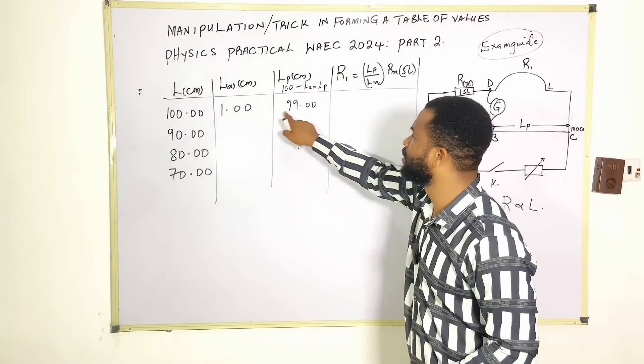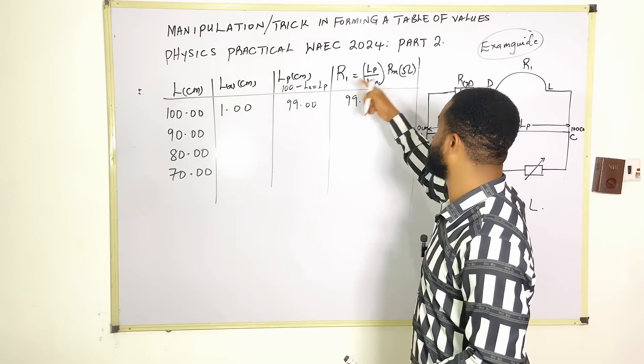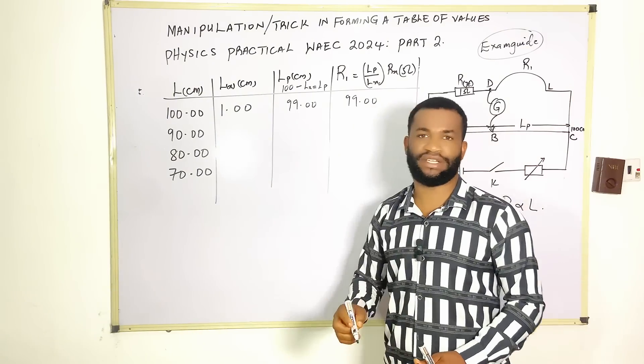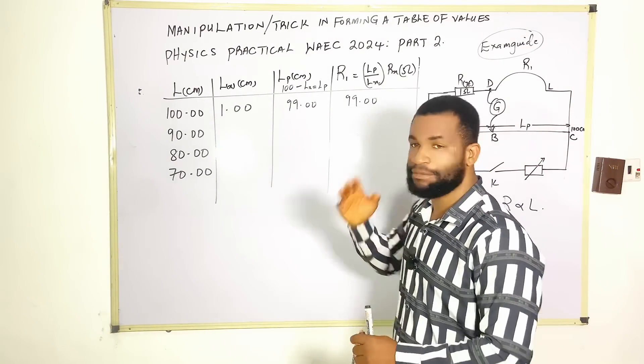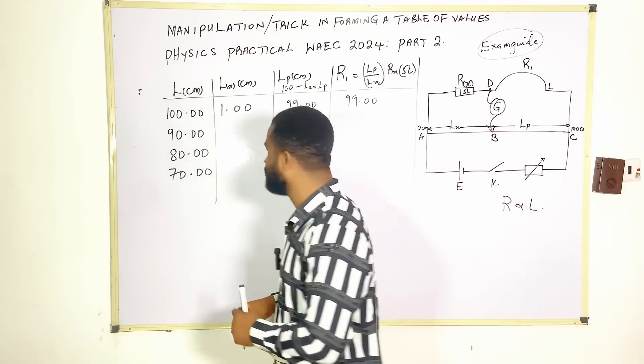When I recorded here, I'm going to have lp divided by this, which gives 99.00, because if I divide by 1, I'm going to still have 99. So that's the first one.